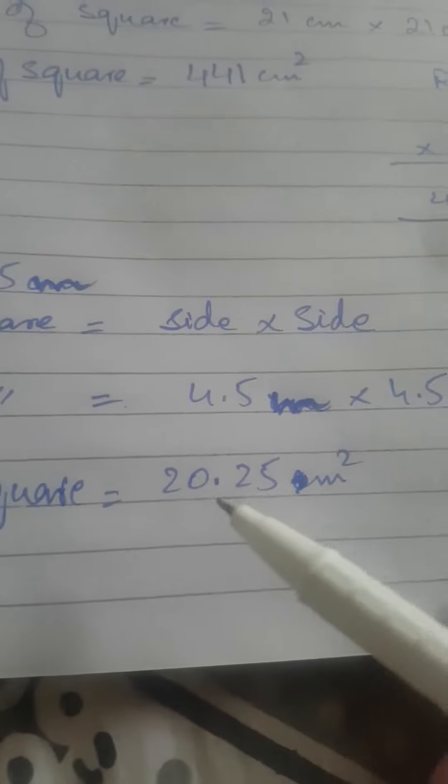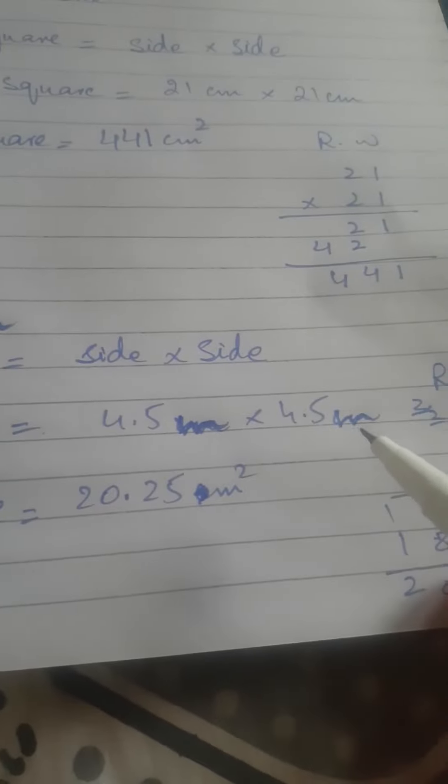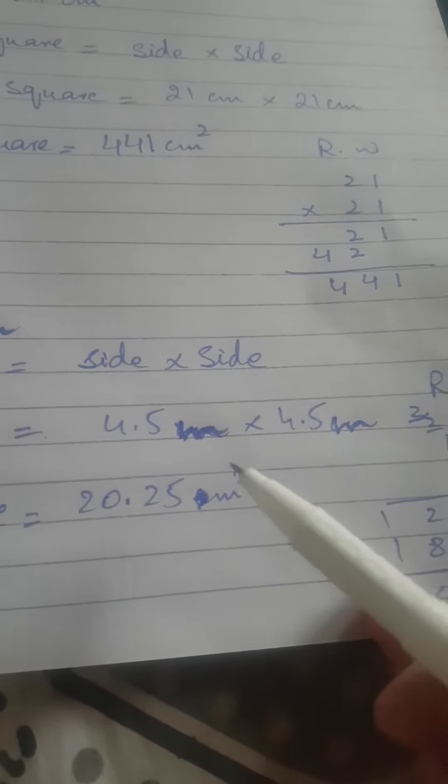So your answer will come area of square which is 20.25 meter square, because meter multiplied by the other meter gives you meter square as their units are added up.